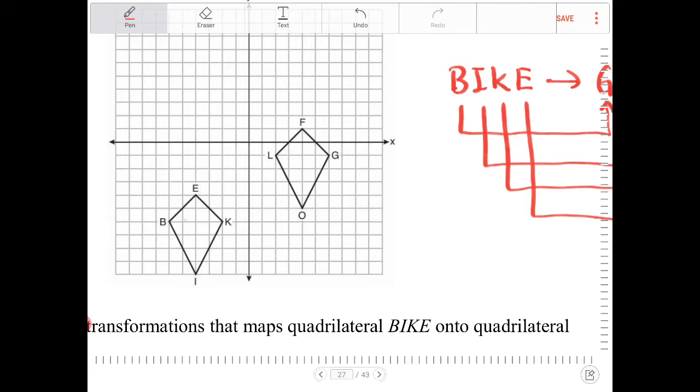If you notice, B-I-K-E right now is drawn in a counterclockwise orientation, whereas G-O-L-F is drawn in a clockwise orientation. So, in order for you to reorient the positioning of the vertices, we're going to have to perform a reflection.